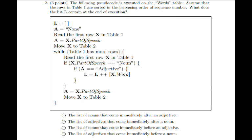Getting into the code, we see that an empty list is assigned to variable L. None value is assigned to variable A. And then we read the first row X in table 1, assign the part of speech of this particular row to A, and move this row to table number 2.